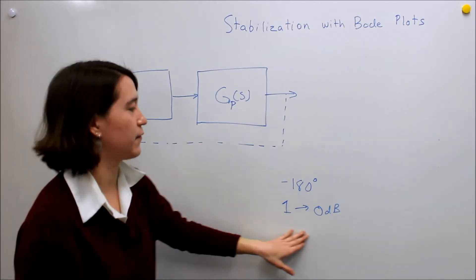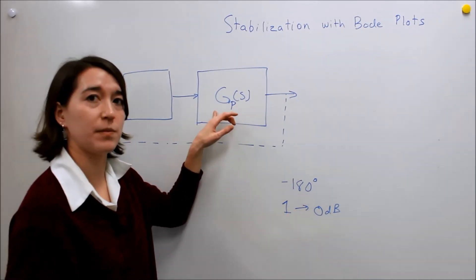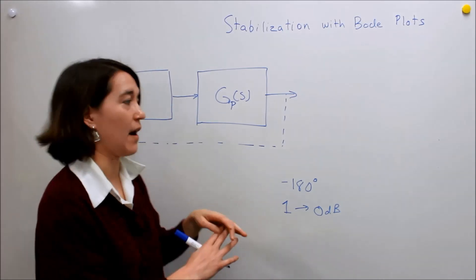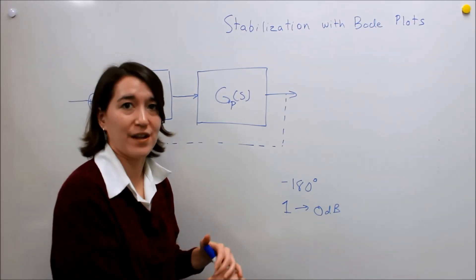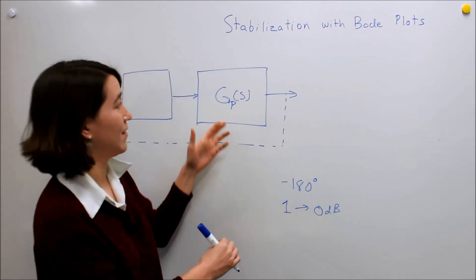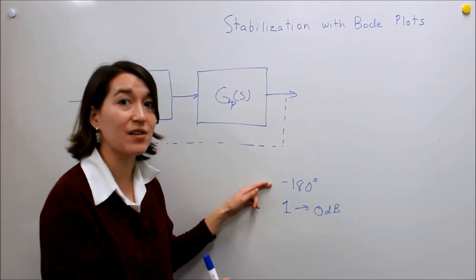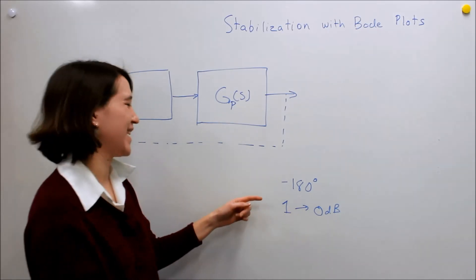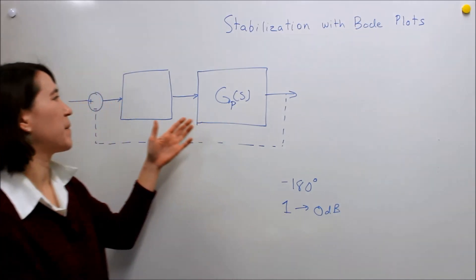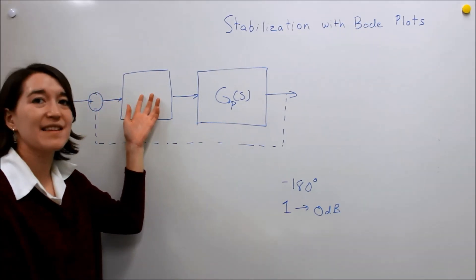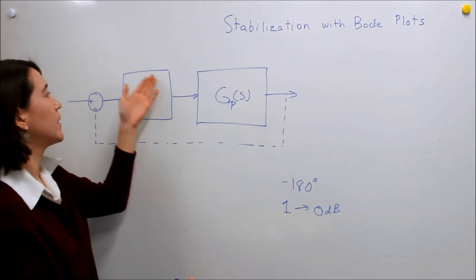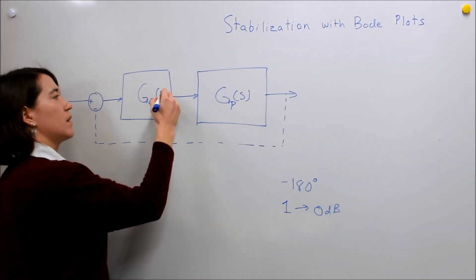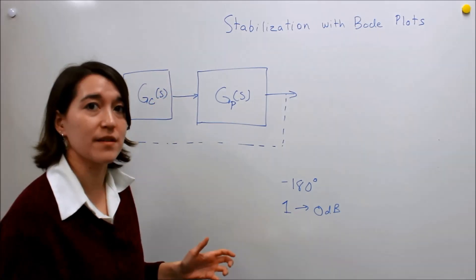If we find that our system, our Gp, is unstable — it has a negative phase margin, meaning the phase goes past negative 180 degrees once at the crossover frequency — then we need to add something here, some controller Gc, to try to stabilize our system.